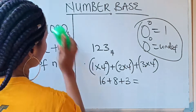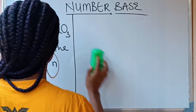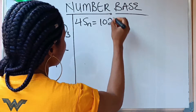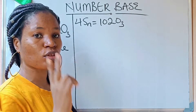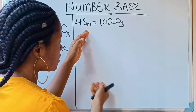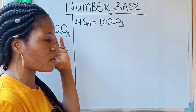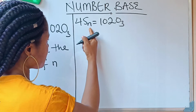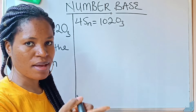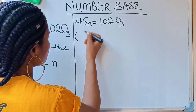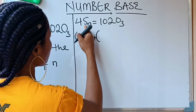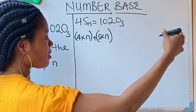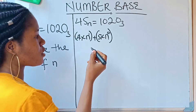We have that 45 in base n is equal to 1020 in base 3. We need to convert both sides to base 10 using the same method. For 45 in base n, since n is our base this time, it becomes: 4 times n raised to the power of 1, plus 5 times n raised to the power of 0.